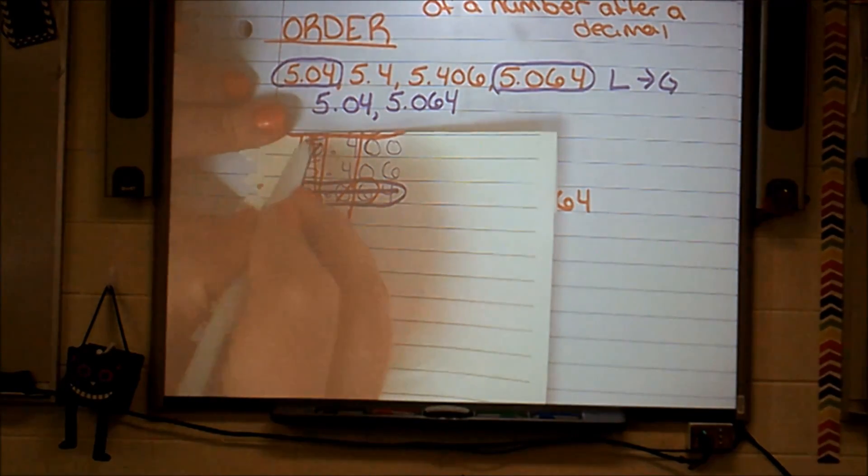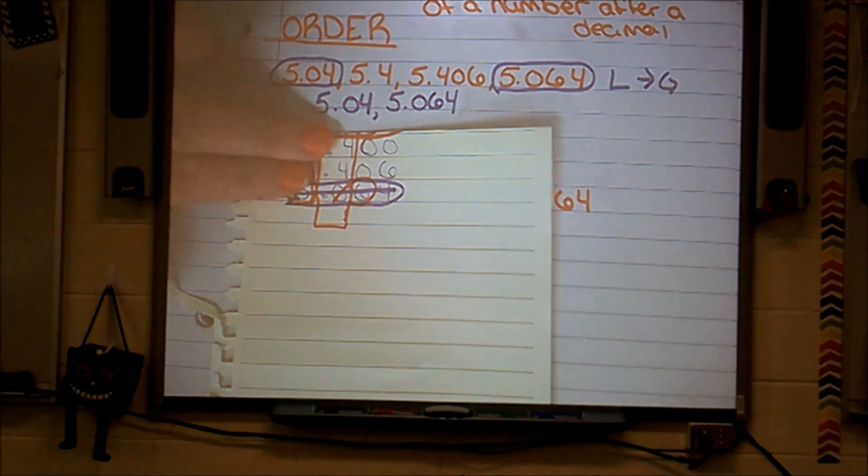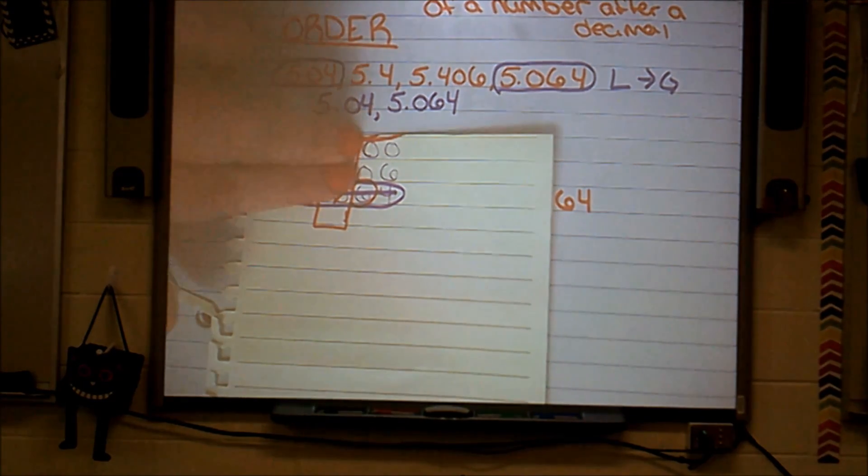So we're going to identify which one is the teeny tiniest number. Again, I still have five. Those don't help me. I go to my next place value, four. They're both fours. That helps me not at all. I move to the next digit.